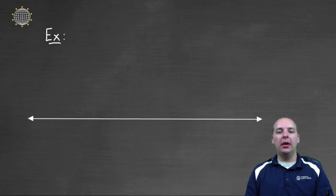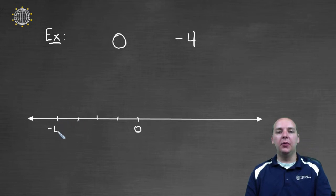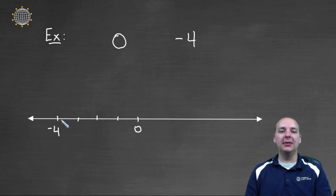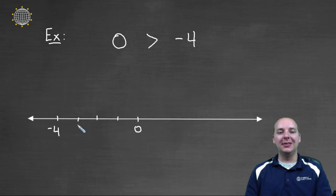How about zero blank negative four? Here's zero, then negative one, two, three, negative four. Now four is greater than zero, but negative four is less than zero because it's to the left of zero on a number line. Another way to say that is zero is greater than negative four because it's to the right of negative four on a number line.